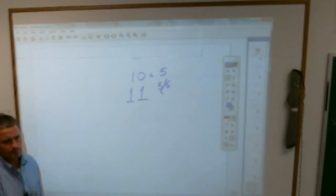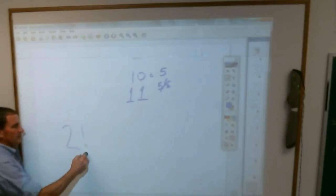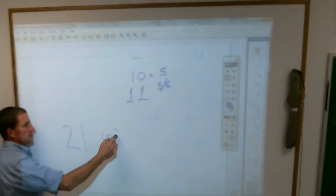Half of thirteen? Aaron? Six and a half. Half of twenty-one. Half of twenty-one is ten and a half.